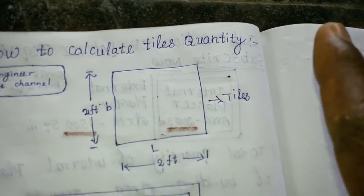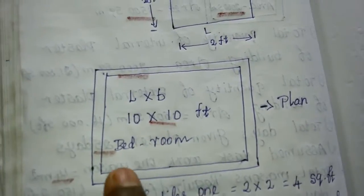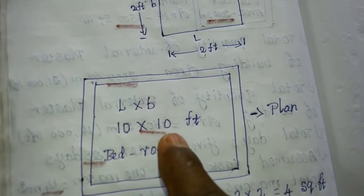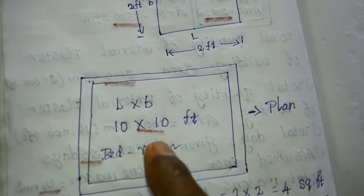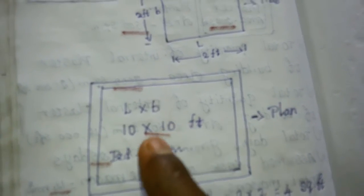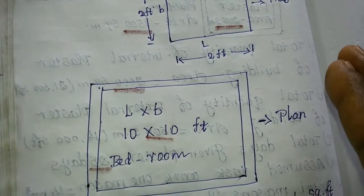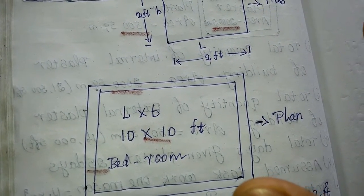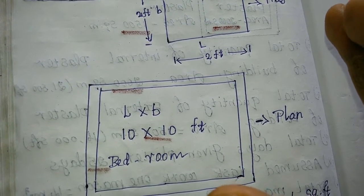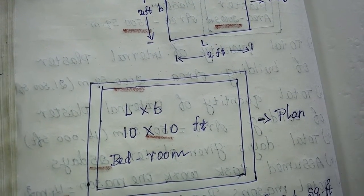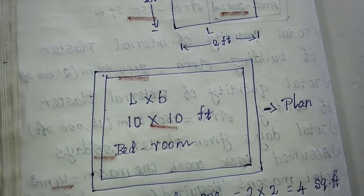Birth 2ft. This is a Bedroom. This is a Length 10ft and Birth 10ft. This is a Tiles Quantity.